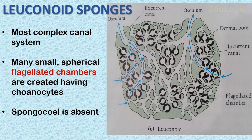The third type of sponges are leuconoid sponges, which have the most complex canal system known as the leucon-type canal system. This results from further folding of the sycon-type canal system. In leuconoid sponges, the surface area of the flagellated layer is increased by the formation of many small spherical flagellated chambers within which the choanocytes are located. The spongocoel is entirely absent in leuconoid sponges, as seen in the diagram where the darker portions in black are the choanocytes in the center of the flagellated chambers.